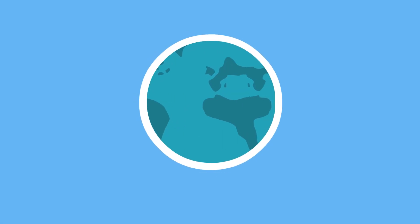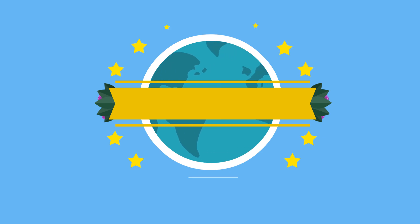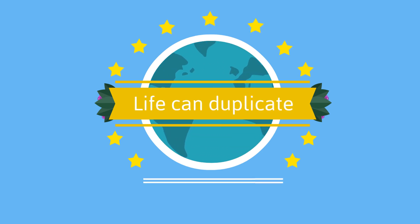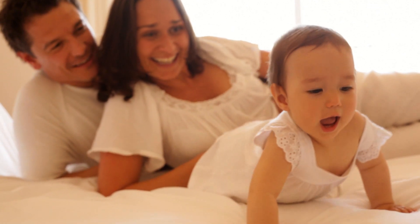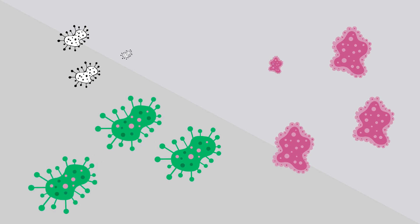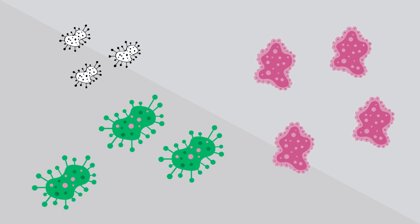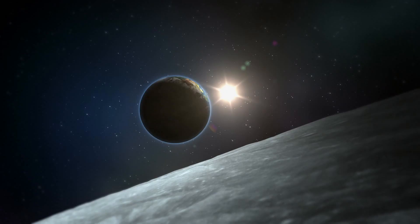Up next, life has the ability to duplicate itself. This duplication can be the offspring of two adults, or bacteria that has the ability to duplicate itself rapidly and make an exact copy of itself. This ability to duplicate keeps life on Earth.